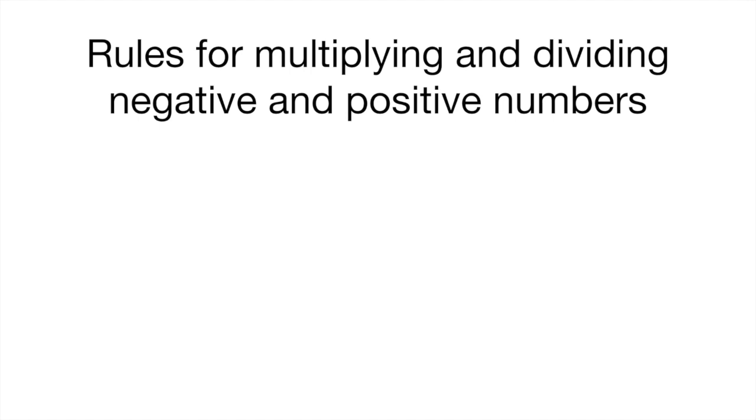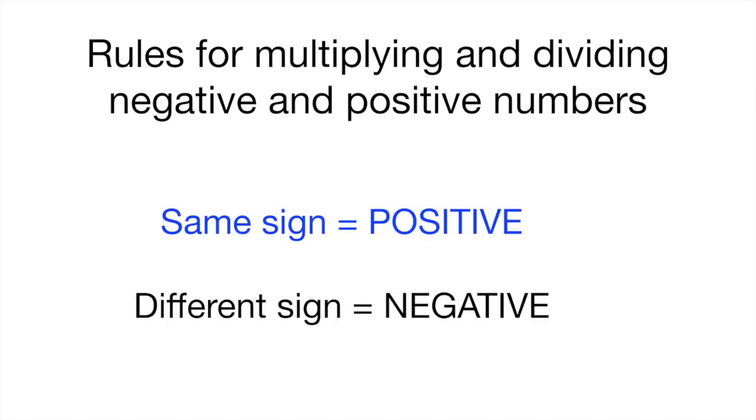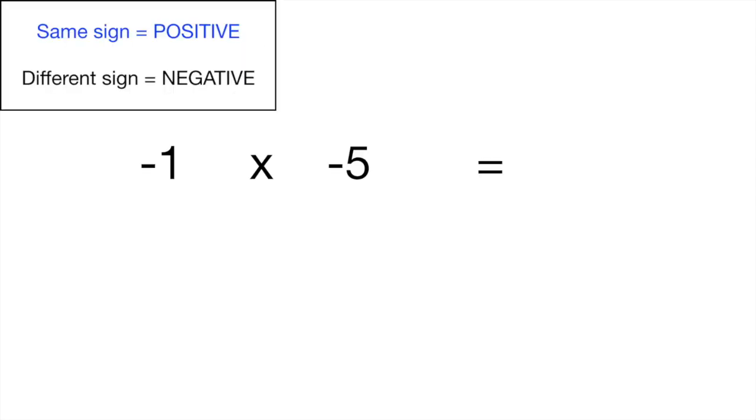And these are the two rules that you have to remember. If you are multiplying or dividing numbers that have the same sign your answer is going to be positive. If you're multiplying or dividing numbers that have different signs your answer is going to be negative. Let me show you with an example.